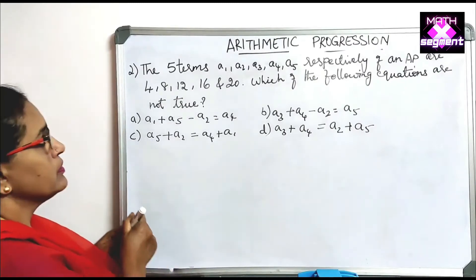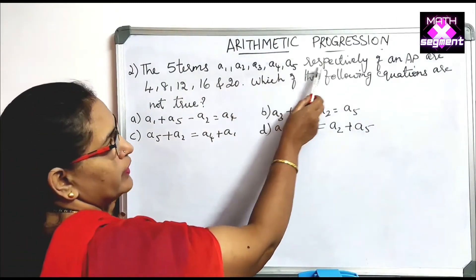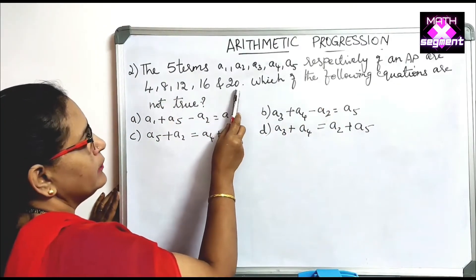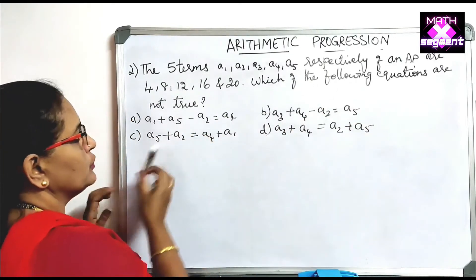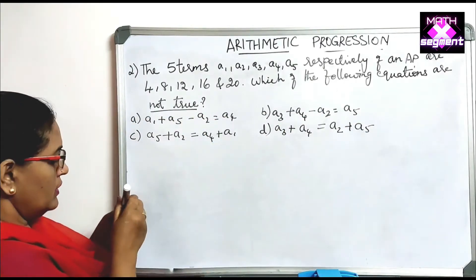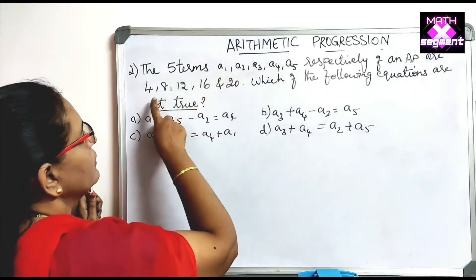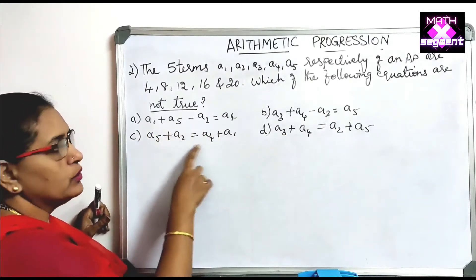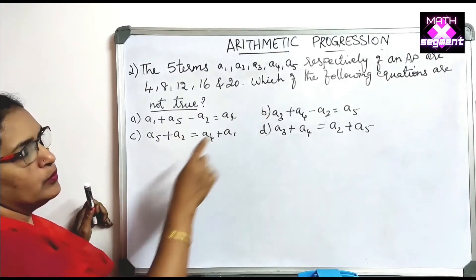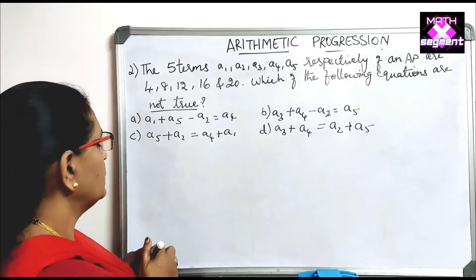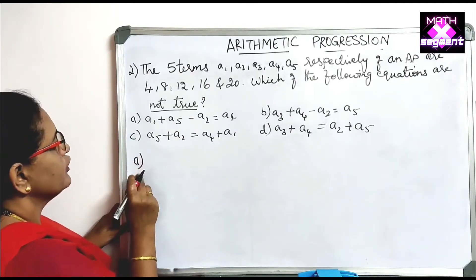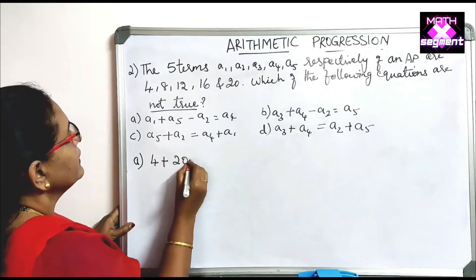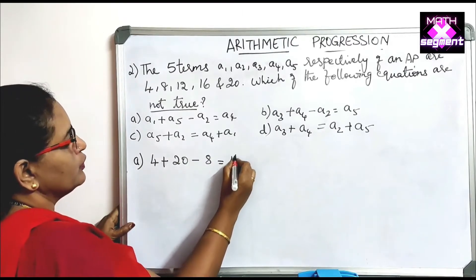The next question: the five terms A1, A2, A3, A4, A5 of an AP are 4, 8, 12, 16, and 20 respectively. Which of the following equations is NOT true? We need to substitute the values into each equation. For option A: A1 is 4, A5 is 20, A2 is 8, A4 is 16. So 20 minus 8 equals 16 minus 4, which gives 12 equals 12 — this is true.